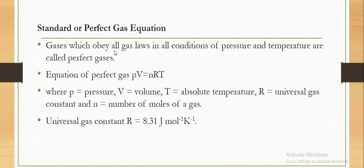Now, what is the perfect gas equation? Gases which obey all gas laws in all conditions of pressure and temperature are called perfect gases. The equation of perfect gas is PV = nRT, where P is the pressure, V is the volume, T is absolute temperature, R is the universal gas constant, and n is the number of moles of a gas. Universal gas constant R = 8.31 J mol⁻¹ K⁻¹.